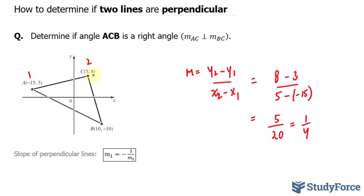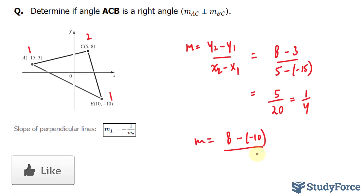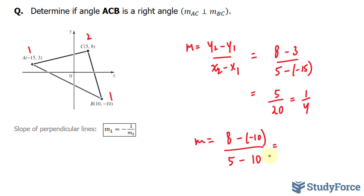Now I need to find the slope of CB. Using the same formula, I'll call this point 2 and point 1. m is equal to — that's my y2, y1 minus negative 10, over my x2 is 5 minus positive 10. 8 minus minus 10 — that's like saying 8 plus 10 — that's 18, over 5 minus 10. 5 minus 10 is negative 5, and this doesn't reduce to anything else.